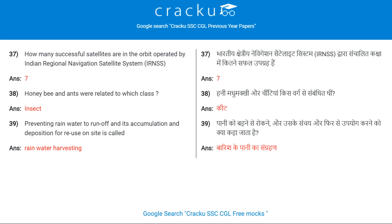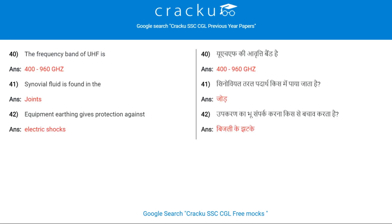Preventing rainwater from running off and its accumulation and deposition for reuse on site is called rainwater harvesting. The frequency band of UHF is 400 to 960 MHz.